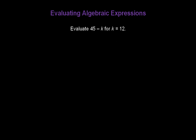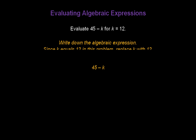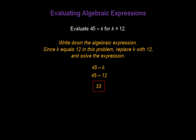Let's do another one. Let's evaluate 45 minus k for k equal to 12. First thing I want to do is write down the expression: 45 minus k. Since k equals 12 in this problem, I'll replace k with 12 and write down 45 minus 12. Now I can solve the expression — 45 minus 12 is 33.